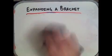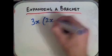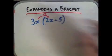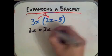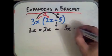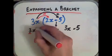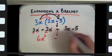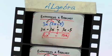Let's look at a slightly harder example: 3x on the outside multiplied by the bracket 2x minus 5. We follow the same steps. 3x times 2x: 3 times 2 is 6, and x times x is x squared, giving 6x squared. Then subtract 3x times 5, which gives 15x. So the final answer is 6x squared minus 15x.